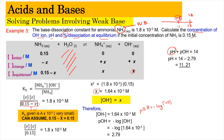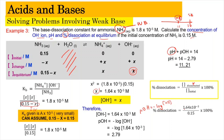We also need to find the percentage dissociation at equilibrium. The formula is: percentage dissociation = (concentration dissociated / initial concentration) × 100%. The concentration dissociated is the x value = 1.64 × 10^(-3), and the initial concentration is 0.15. So percentage dissociation = (1.64 × 10^(-3) / 0.15) × 100% = 1.1%. This is quite logical because a weak base only dissociates partially in water.